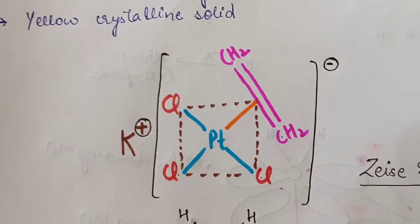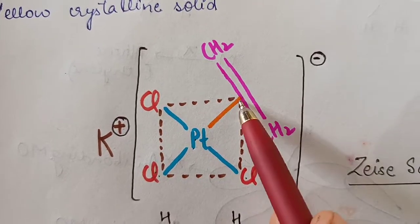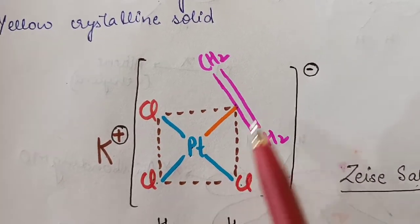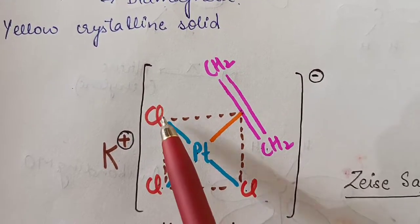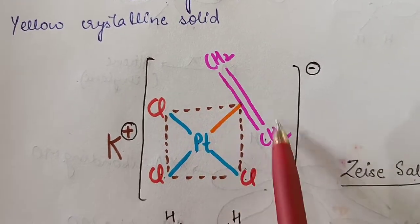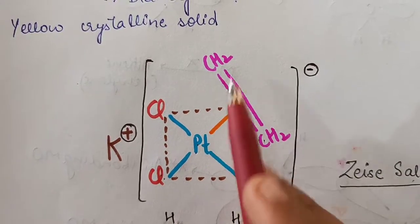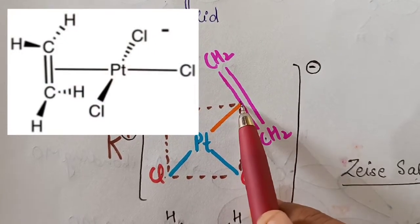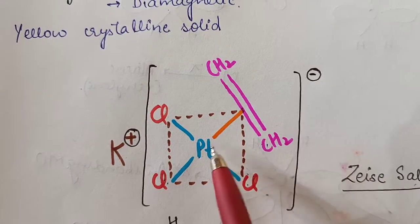Regarding the structure and bonding in the metal ethylene complex: the three chlorine atoms along with the midpoint of the ethylene double bond form a square plane — they all lie in the same plane. The carbon-carbon double bond of ethylene is perpendicular to the plane containing platinum and the three chlorine atoms, meaning one CH2 group is above and one CH2 is below the plane, with the double bond center in the middle.